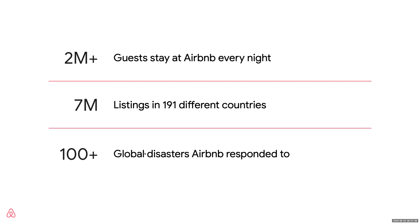Airbnb also provides support to communities. Over the last 10 years, we've used our disaster response tool over 100 times — this is where hosts open up their homes in times of crises. It's relevant right now with the fires in California. Most recently, hosts opened up over 200,000 listings to frontline workers with respect to COVID.